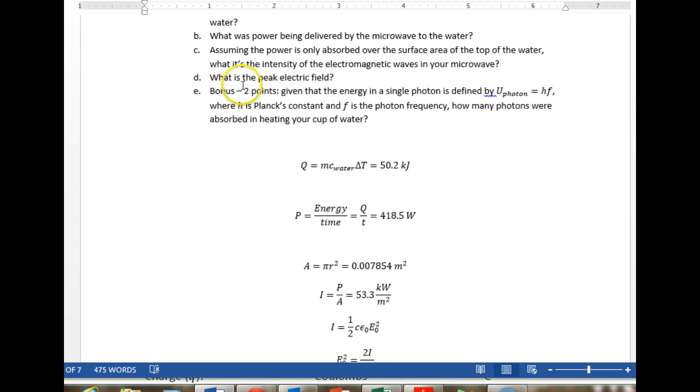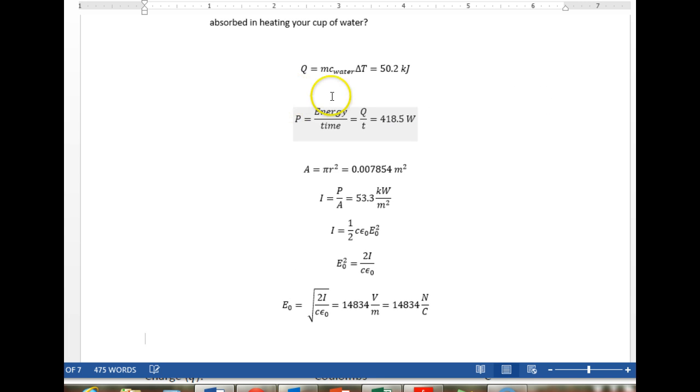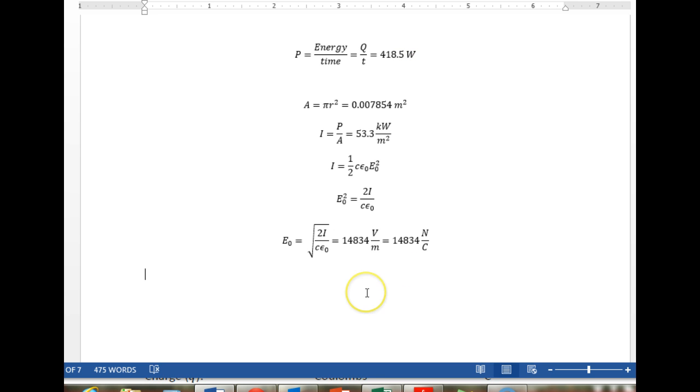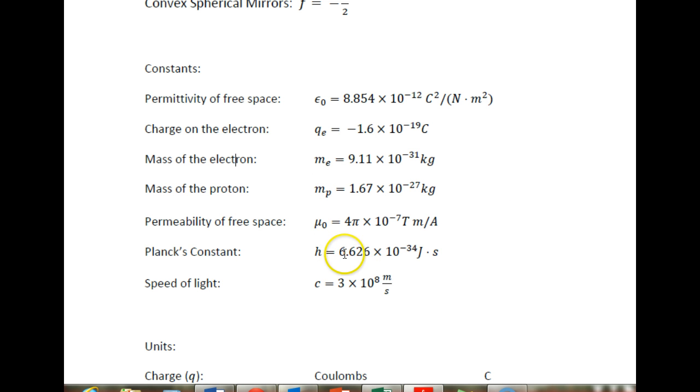And then there comes the bonus. Given that the energy in a single photon is the frequency of the photon times Planck's constant, how many photons does this amount of energy, 50.2 kilojoules represent? So I'm going to say U sub photon equals HF. Planck's constant. Anybody remember Planck's constant? 6.626 times 10 to the minus 34 joules seconds.